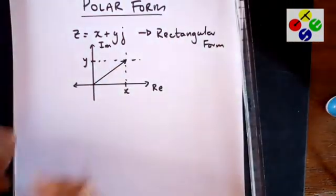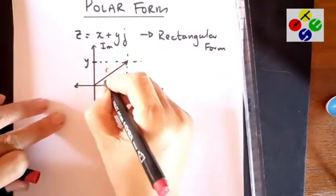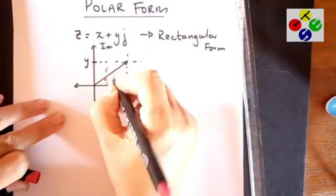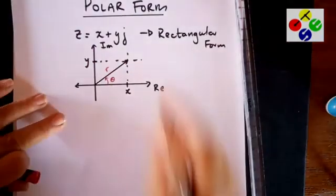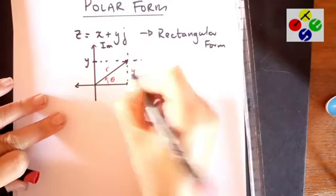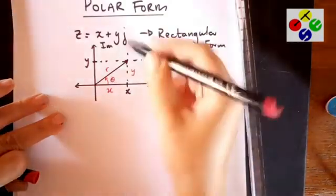Now, the length of that line we're going to call R, and that angle, which gives a direction, is theta. That means that the length on this side is going to be y, and this length here is going to be x.